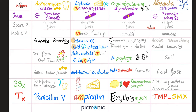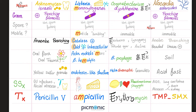Both Nocardia and Actinomyces are branching filamentous organisms, and both cannot make spores. But here are some differences: Nocardia is ubiquitous in the soil, while Actinomyces live within you as part of your flora — in the upper respiratory tract, in your mouth, in your GI, and in the female reproductive system. Nocardia is aerobic, but Actinomyces are not. Nocardia is weakly acid-fast, but Actinomyces are not acid-fast.